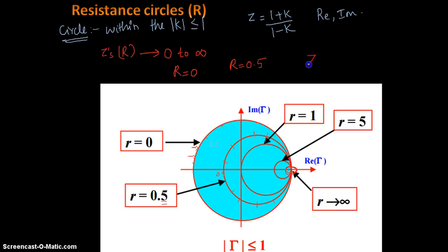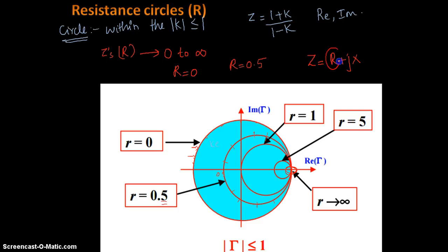So if you have to mark an impedance value on the k plane with a real part and an imaginary part, identifying where the real part falls will be on these horizontal circles that you see on your Smith Chart. Now we also have to represent the second part, which is your reactance or imaginary part X. How does that work?